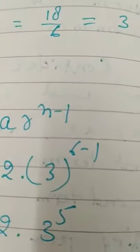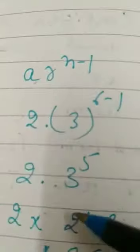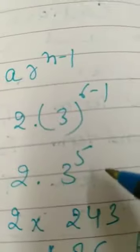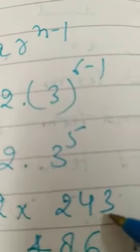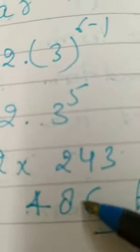3 times 3 times 3, 5 times. If you multiply, 3 to the power 5 is 243. And the answer is 2 times 243, which is 486.